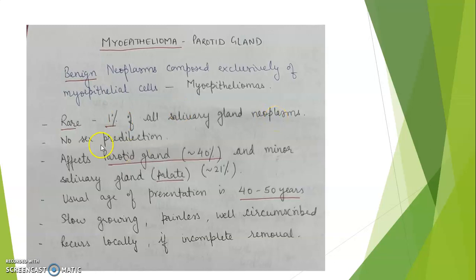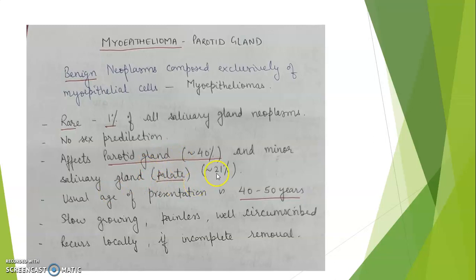There is no sex predilection. Myoepitheliomas affect approximately 40% of parotid gland cases, so they are most common in the parotid gland. They can also affect the minor salivary gland of the palate. The usual age of presentation is 40 to 50 years.